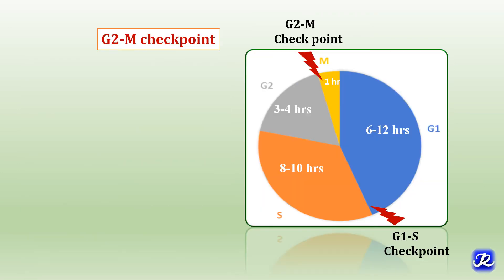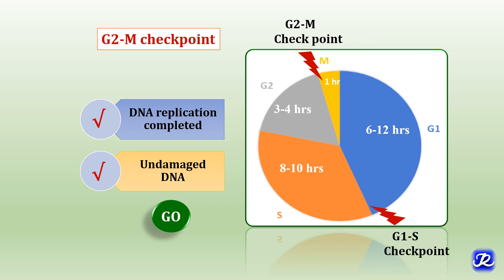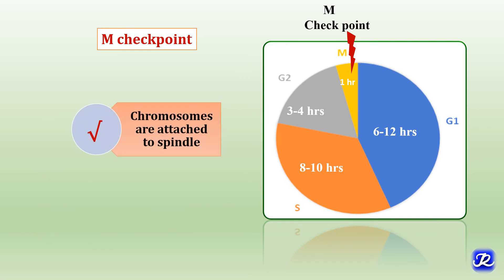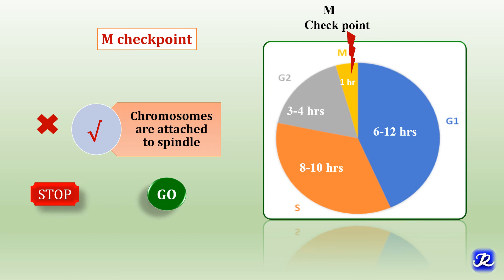At the G2/M checkpoint, if DNA replication is completed and DNA is undamaged, the cell is allowed to go from G2 to M phase. But if replication is not completed or there is DNA damage, the cell is arrested in G2 phase. At the M checkpoint, it is checked whether chromosomes are attached to the spindle or not. If they are attached, the cell is allowed to divide; if not, cell division does not occur.